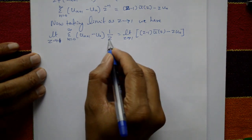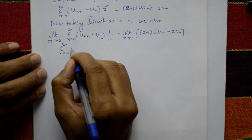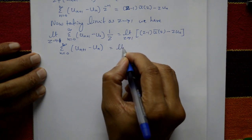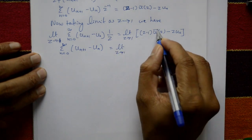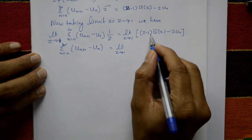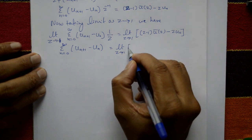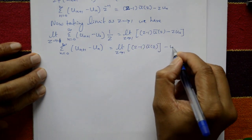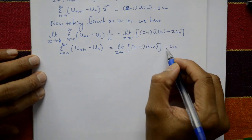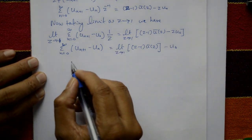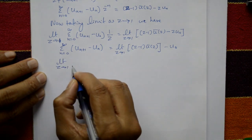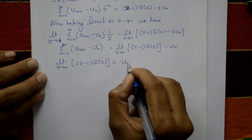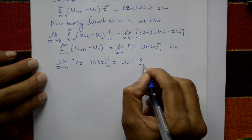Applying the limit z tends to 1, the summation from n equals zero to infinity of (u[n+1] minus u[n]) equals the limit z tends to 1 of (z minus 1)·ū(z) separately, and applying z equals 1 to the second term gives minus u₀. Shifting this to the left-hand side: limit z tends to 1 of (z minus 1)·ū(z) equals u₀ plus the summation from n equals zero to infinity of (u[n+1] minus u[n]).